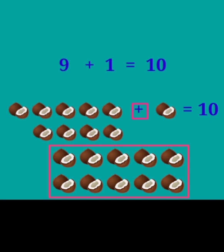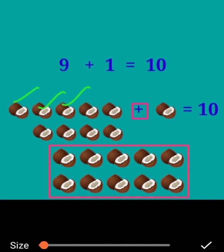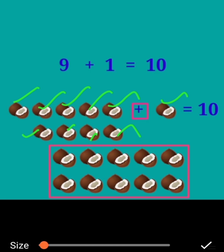Next: how many coconuts are given here, children? Shall we count? 1, 2, 3, 4, 5, 6, 7, 8, 9. Nine coconuts plus adding 1 more. 1, 2, 3, 4, 5, 6, 7, 8, 9, 10. 9 plus 1 is equal to 10.